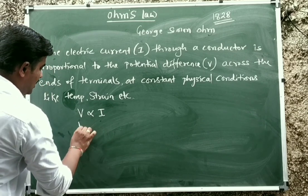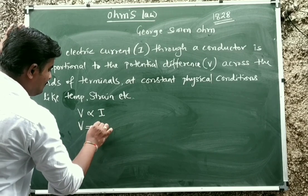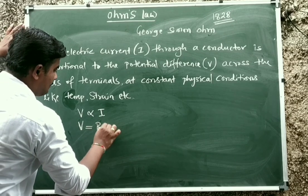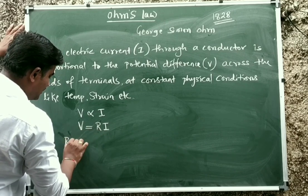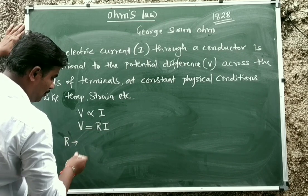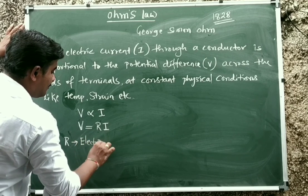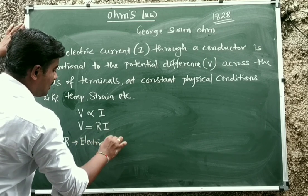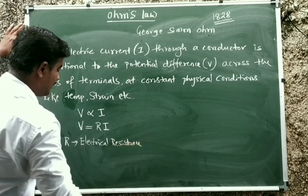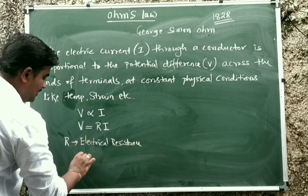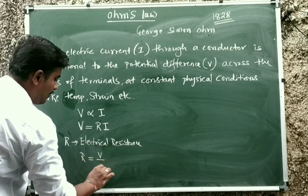Removing the proportionality symbol, I will write it as V is equal to RI, where R is a constant. This proportionality constant is called electrical resistance. And this electrical resistance R is equal to V divided by I.